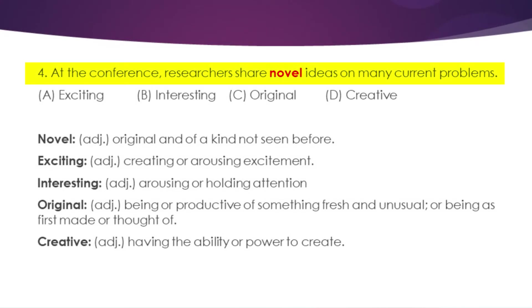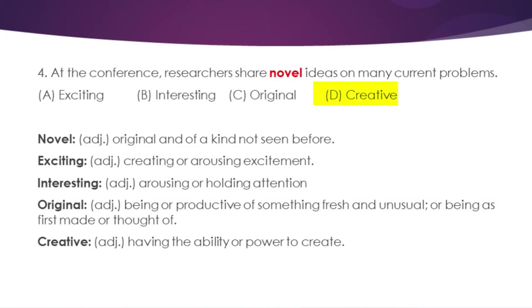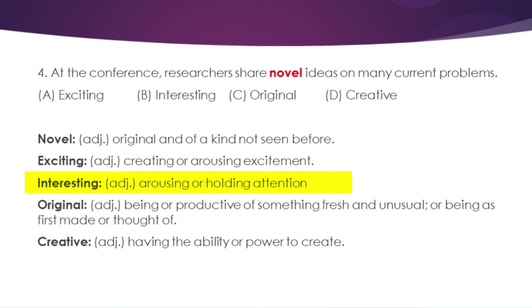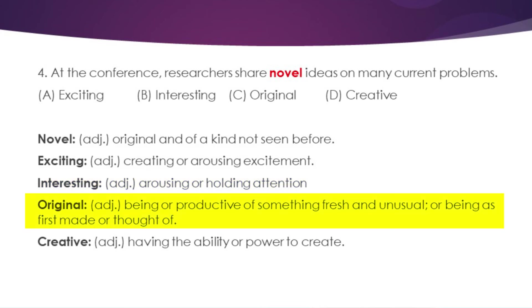Question four. At the conference, researchers shared novel ideas on many current problems. Our word for consideration is 'novel'. Our options are A — exciting, B — interesting, C — original, and D — creative. Novel is an adjective which means original and of a kind not seen before. Exciting is an adjective meaning creating or arousing excitement. Interesting is an adjective meaning arousing or holding attention. Original is an adjective meaning being or productive of something fresh and unusual, or being as first made or thought of.